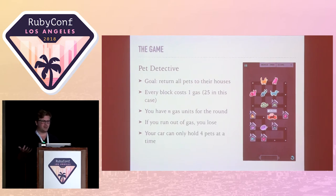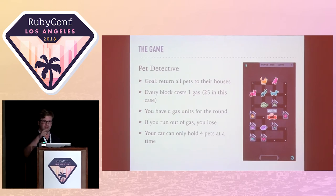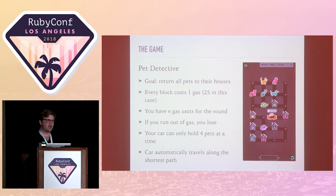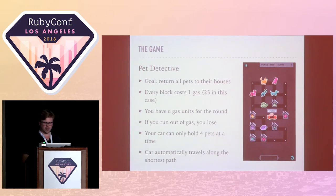Your car can only hold four pets at a time. There's a little bar at the very bottom of the screen where your pets appear when you pick them up. The car automatically travels along the best path — you don't tell it where to go in terms of up, down, left, right. You simply tap on a pet or a house and the car always chooses the shortest path. That's a pretty key part of the whole thing.